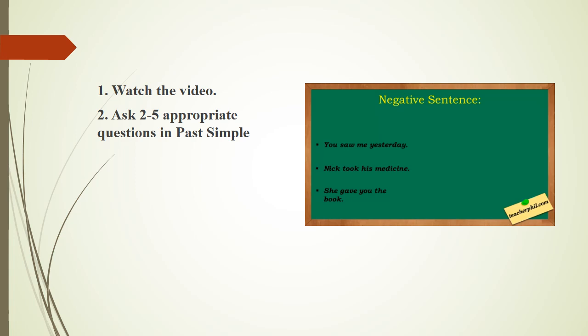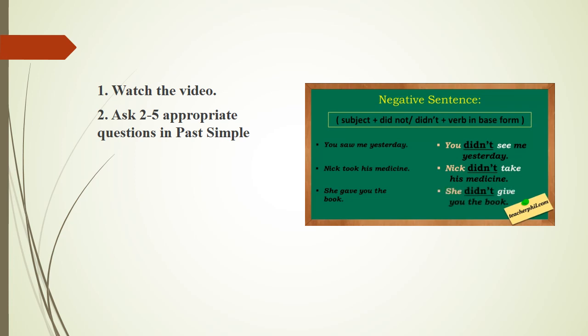For negative sentences, the structure is subject plus did not or didn't plus verb in base form. Examples: You didn't see me yesterday. Nick didn't take his medicine. She didn't give you the book. We only insert the words did not or didn't between the subject and the verb. But if you notice, this time the verbs in the sentences are in their base forms, not in past.